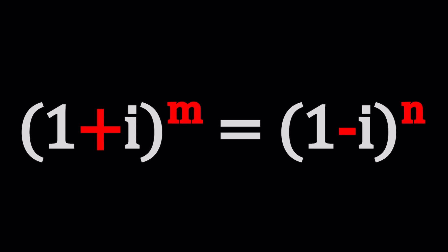So we have 1 plus i to the power m equals 1 minus i to the power n. Why is this equation interesting? Not because I said so, but it contains different bases and different exponents. Wait a minute, are the exponents different? How do we know them?